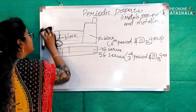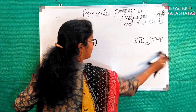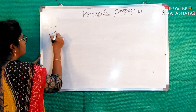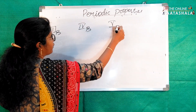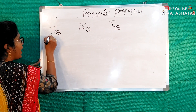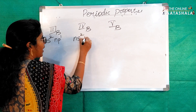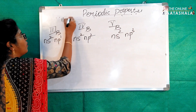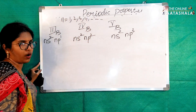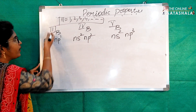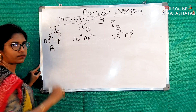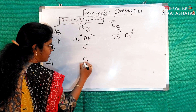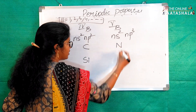Now I'll give an example showing how to derive the general electronic configuration for P block elements. Take 3A, 4A, and 5A groups. For 3A (Boron family): ns2, np1. For 4A (Carbon family): ns2, np2. For 5A (Nitrogen family): ns2, np3. Examples are Boron and Aluminium for 3A, Carbon and Silicon for 4A, and Nitrogen and Phosphorus for 5A.